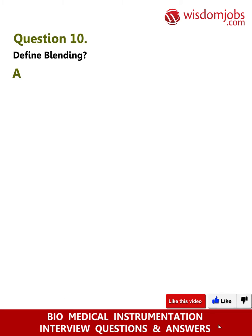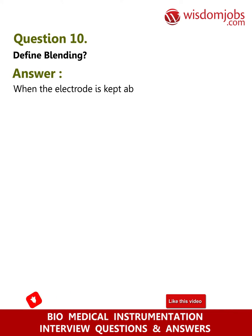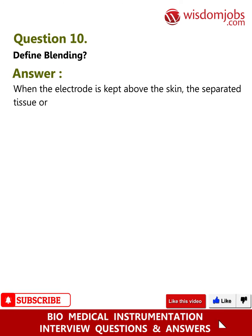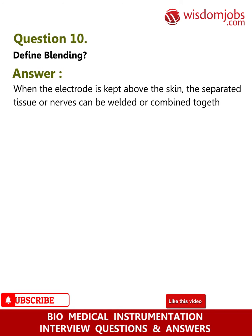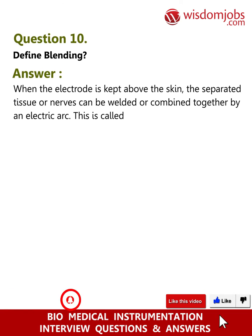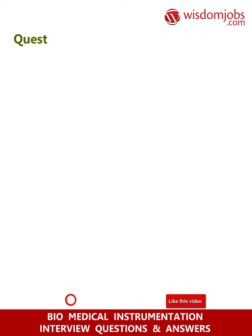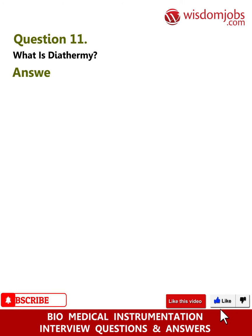Question 10: Define blending. Answer: When the electrode is kept above the skin, the separated tissue or nerves can be welded or combined together by an electric arc. This is called blending.